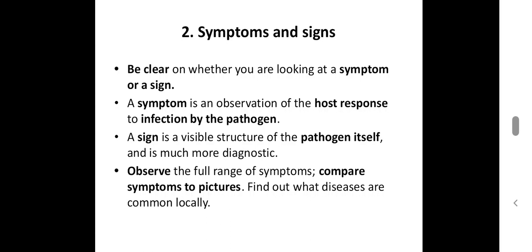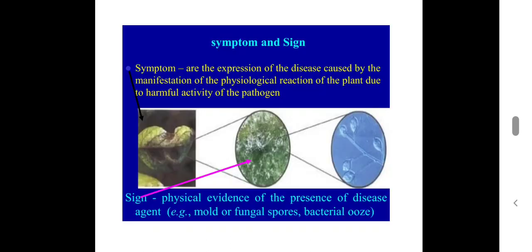Observe the symptoms and compare them to pictures to identify the disease. In this diagram, you can see the difference between symptom and sign. This diagram is about leaf blight of potato — the symptoms are shown. The sign is the actual presence of spores and actual structure; here the sporangia and sporangiophores are shown, which are typical elliptical sporangia.